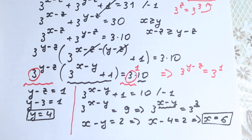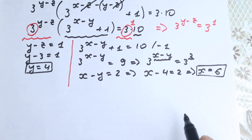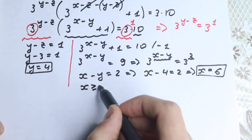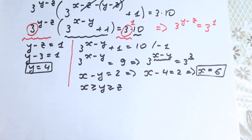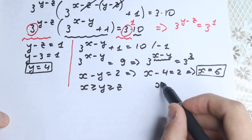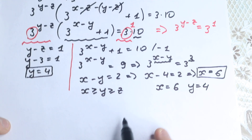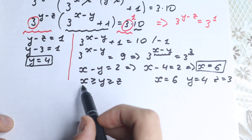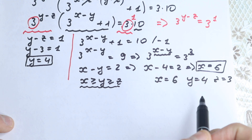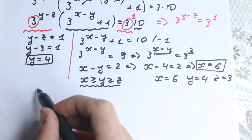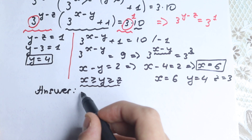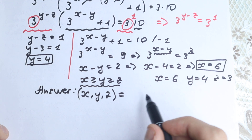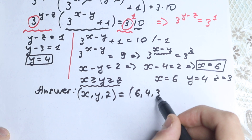We found all solutions. The base solution with our ordering assumption is x equals 6, y equals 4, z equals 3. Now let's write the general answer — the set of all ordered triples (x, y, z). We list all permutations: (6, 4, 3), (6, 3, 4), (4, 6, 3), (4, 3, 6), (3, 6, 4), and (3, 4, 6).